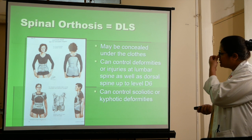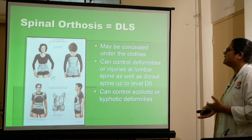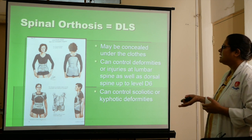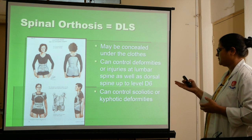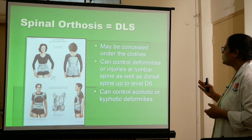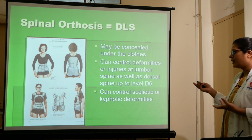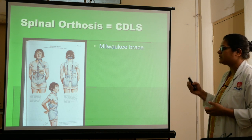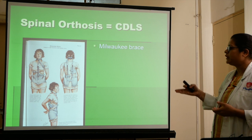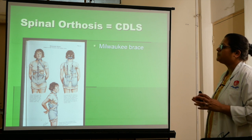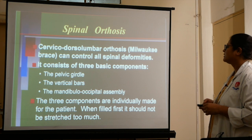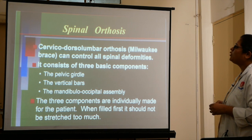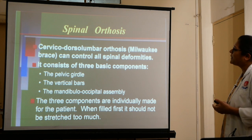The Milwaukee brace may be concealed under clothes and can control deformities or injuries at the lumbar spine as well as the dorsal lumbar spine. It can control scoliotic or kyphotic deformities — both are spine deformities. This is how the Milwaukee brace looks; it supports the whole spine including the lateral parts of the joint.